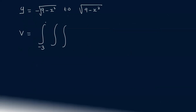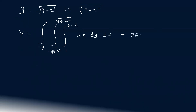So for x from -3 to 3, y from minus √(9 - x²) to √(9 - x²), z from 1 to 5 minus x: the triple integral dz dy dx also equals 36π.